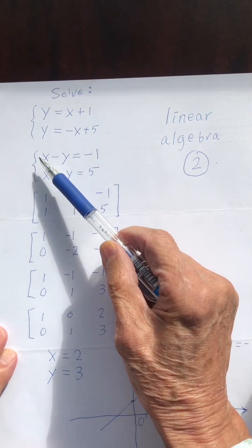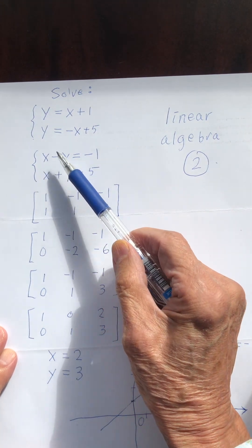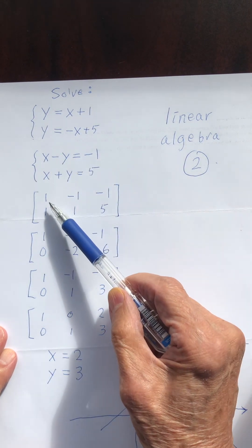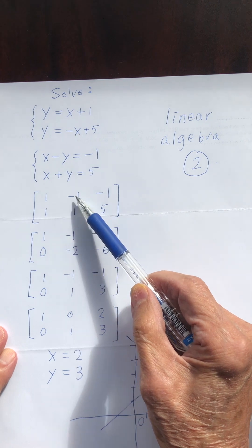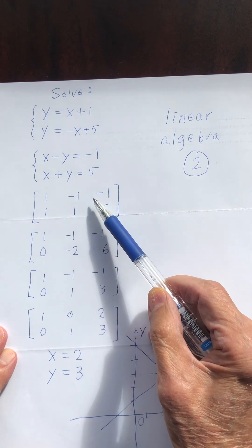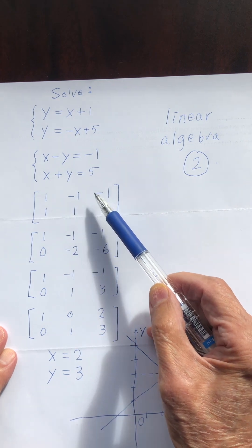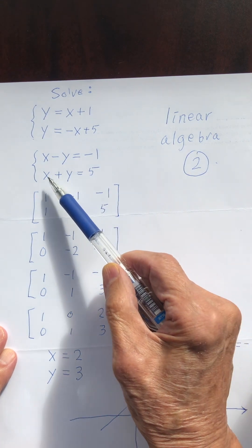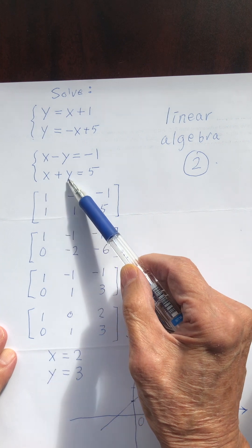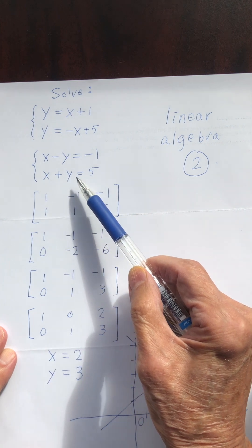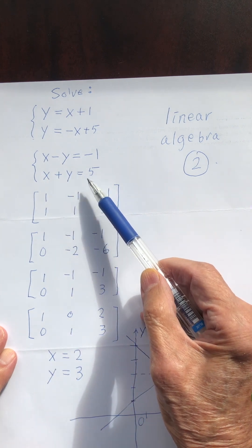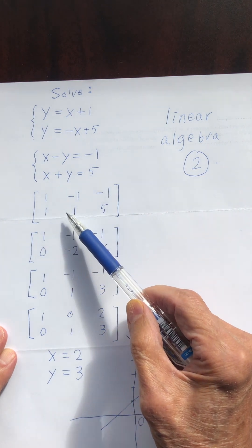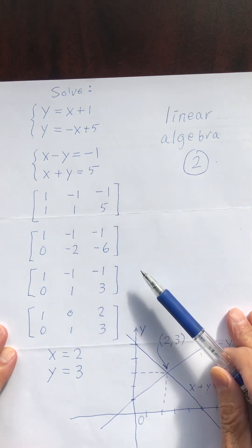So I have the matrix entries: for the first equation, 1, negative 1, negative 1. And for the second equation, 1, 1, 5.